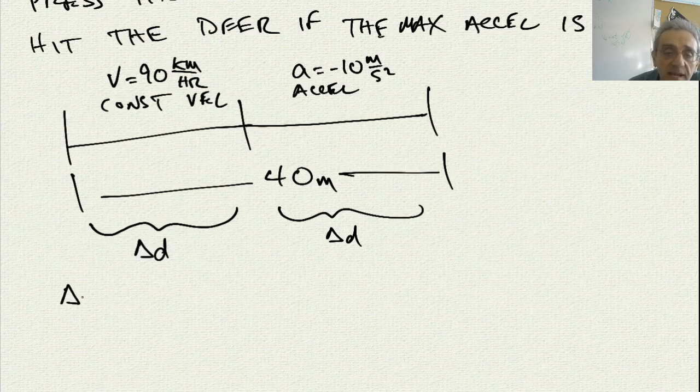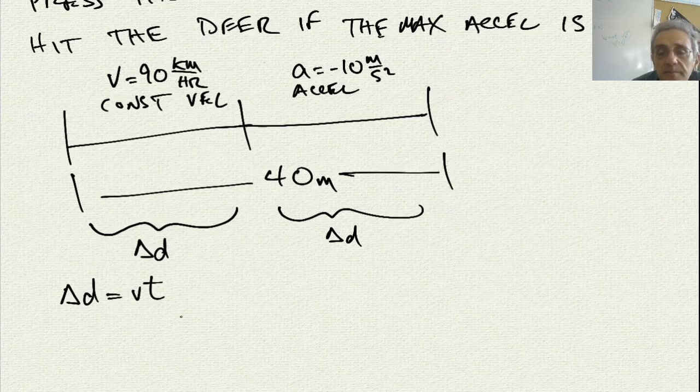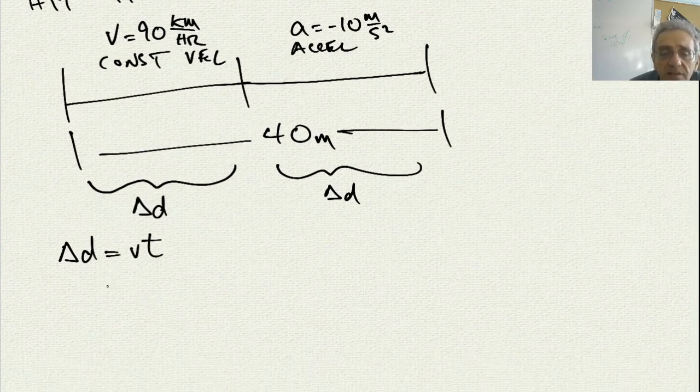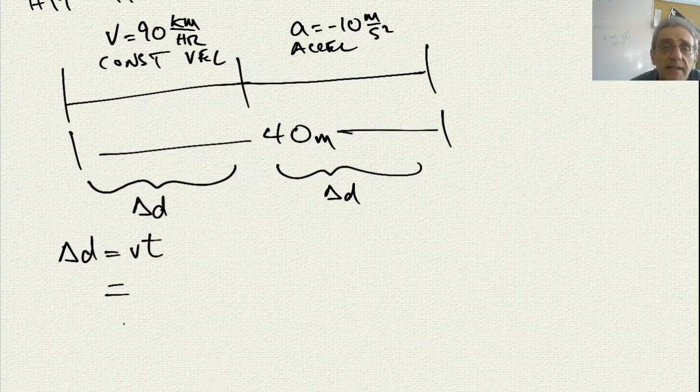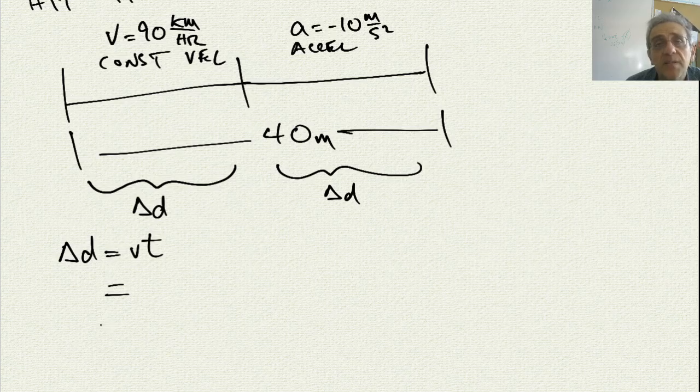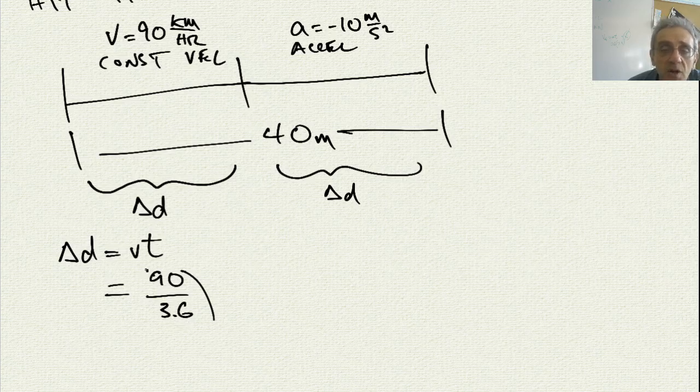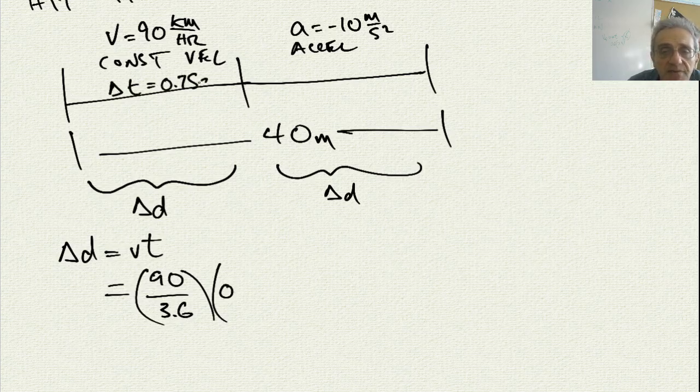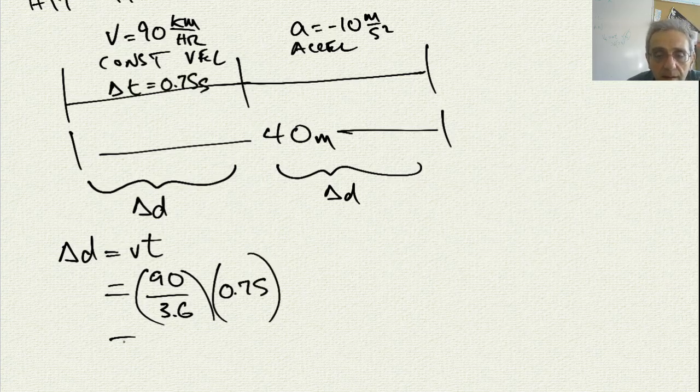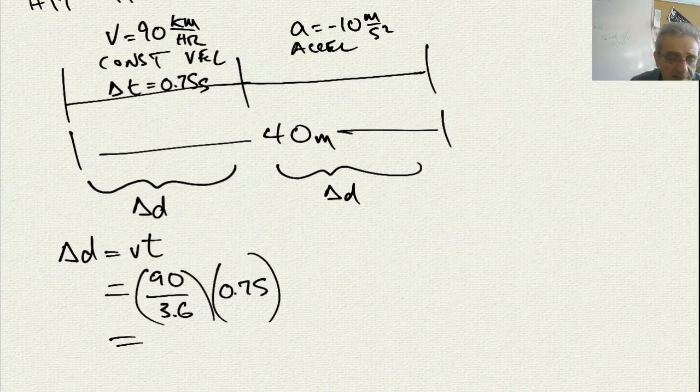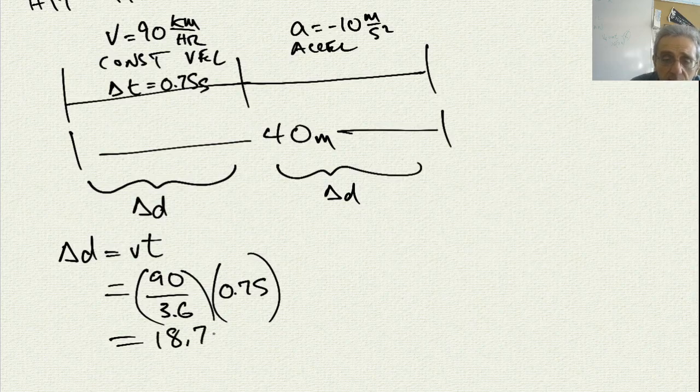For the constant velocity part, all we need to say is delta d equals v times t. We have to convert 90 kilometers per hour into meters per second. Since kilometer per hour is bigger, meter per second is smaller, so we would divide 90 by 3.6, which is our conversion factor. That's going to give us our velocity. We know the reaction time is 0.75 seconds. This is going to give us 18.75 meters.